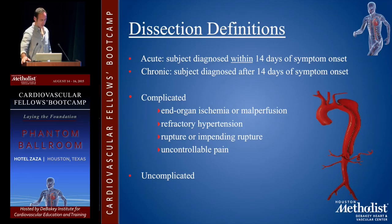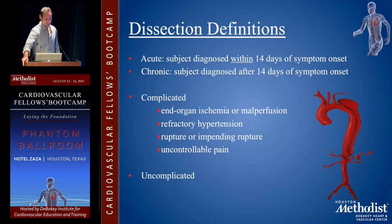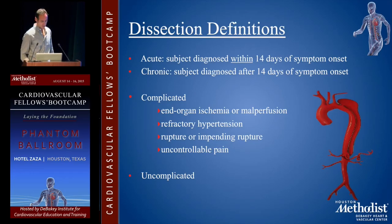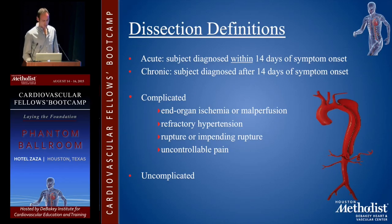An acute dissection is one that's diagnosed within 14 days of symptom onset, and chronic after 14 days. When they're complicated, meaning they have problems, end organ ischemia and malperfusion are usually a part of it, as well as refractory hypertension, rupture or impending rupture, and uncontrollable pain. The uncomplicated ones are managed probably more medically still than anything else.